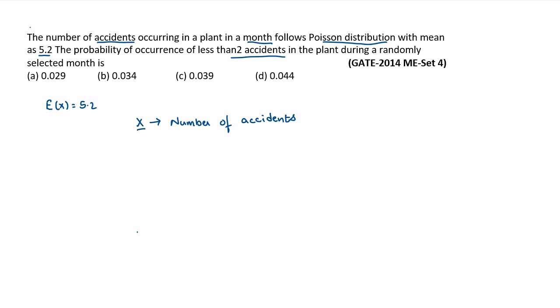Let x denote the number of accidents occurring in a month. Then probability that less than 2 accidents occur means either no accidents occur or one accident occurs.